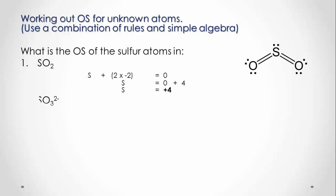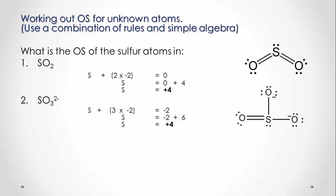In the second example, the sulfite ion: there is one sulfur atom and three oxygen atoms, so the oxidation states add to equal the charge of negative two. Solving the expression — sulfur plus three oxygen atoms equals negative two — gives sulfur an oxidation state of positive four.